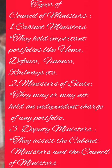The second type of Council of Ministers is Ministers of State. They are the second category of Ministers. They may or may not hold an independent charge of any portfolio. The Prime Minister may or may not consult them. They do not participate in the Cabinet meetings, but they may be invited to attend meetings when matters concerning their departments are being considered.